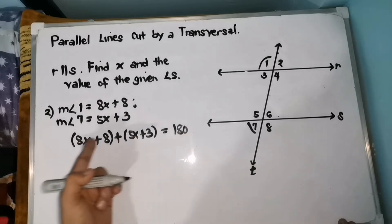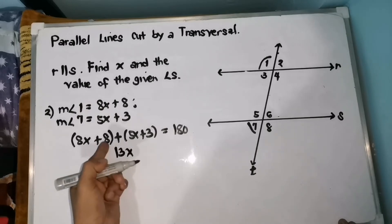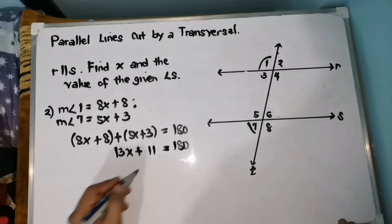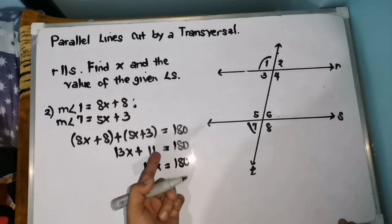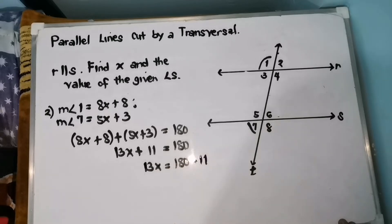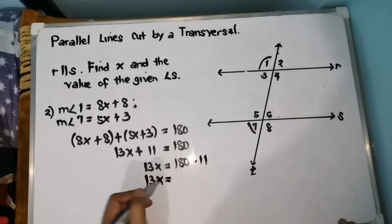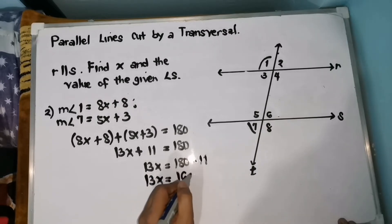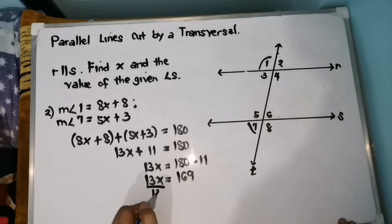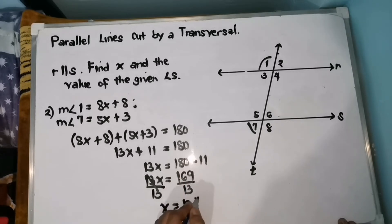So we have: (8X plus 8) plus (5X plus 3) equals 180 degrees. Combine like terms: 8X plus 5X is 13X, and 8 plus 3 is 11, equals 180. So 13X equals 180 minus 11 equals 169. By applying the multiplication property of equality, divide both sides by 13: X equals 169 divided by 13 is 13. Therefore, the value of X is 13.